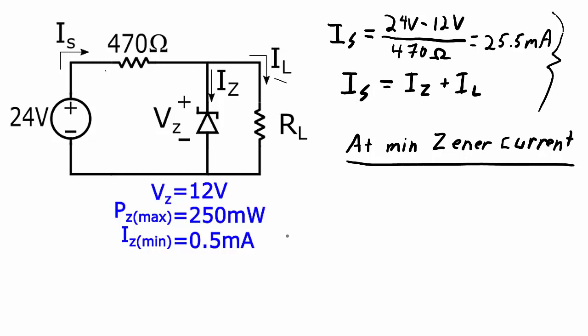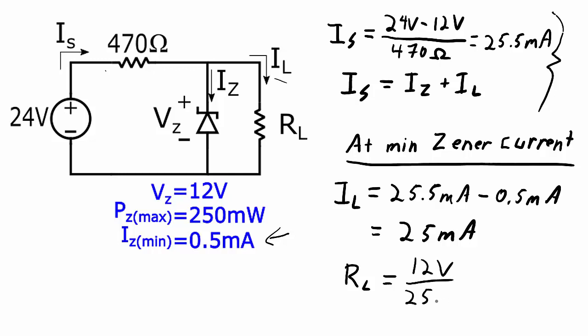The minimum that we can have for the zener current is 0.5 milliamps. So that means our load current is going to be 25.5 milliamps minus 0.5 milliamps. So the load current will be 25 milliamps when the zener current is at its minimum. Still 12 volts across that load resistor. So what resistance will give us 25 milliamps when there's 12 volts across it? Simply apply Ohm's law here. 12 volts divided by 25 milliamps. And that works out to 480 ohms.